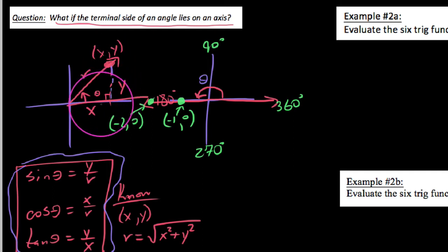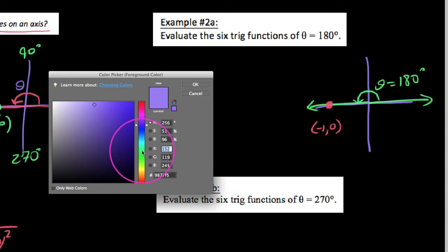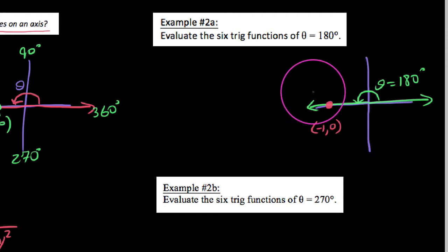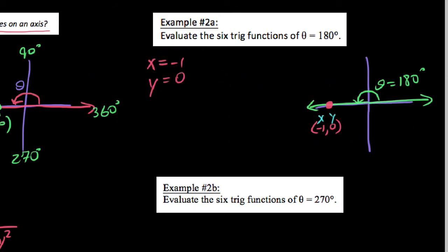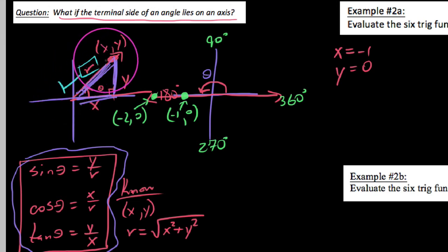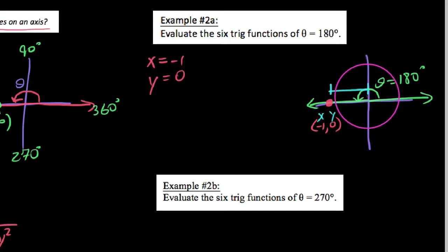In the past video, we were able to take this point and drop down an altitude to make a right triangle. What makes this more unique is there is no triangle in this situation. We can't even drop down an altitude because the angle isn't in the air. We know x equals negative one and y equals zero. By definition, r is the distance from our point on the terminal side back to the origin. Given that r is always positive, the distance here is one.